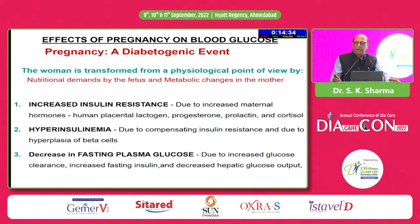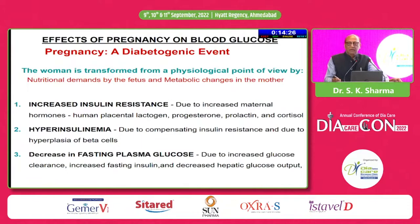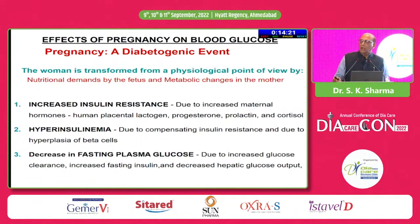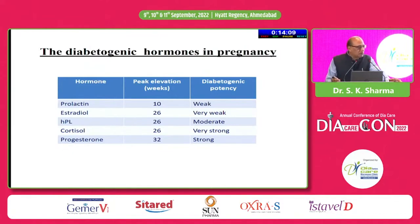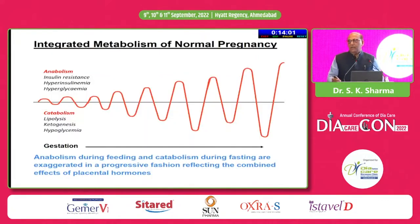Pregnancy, even in a normal lady, has a very diabetogenic profile. There is insulin resistance, there is hyperinsulinemia, and in the beginning of pregnancy in a normal person, glucose profiles are going down because of hyperinsulinemia. But ultimately when the placenta is of good size, it starts producing large amounts of placental hormones like HPL, cortisol, progesterone, etc. These are all diabetogenic and lead to increased insulin resistance in these ladies.